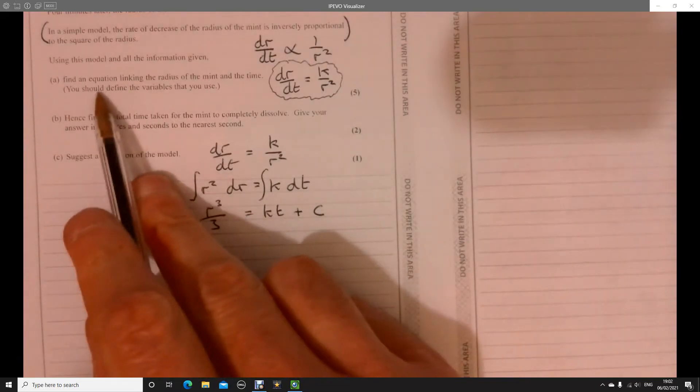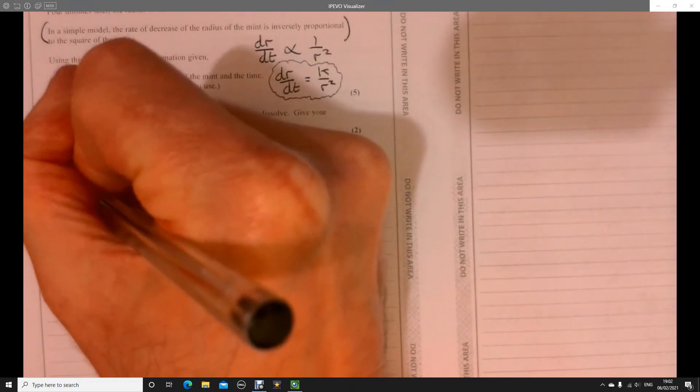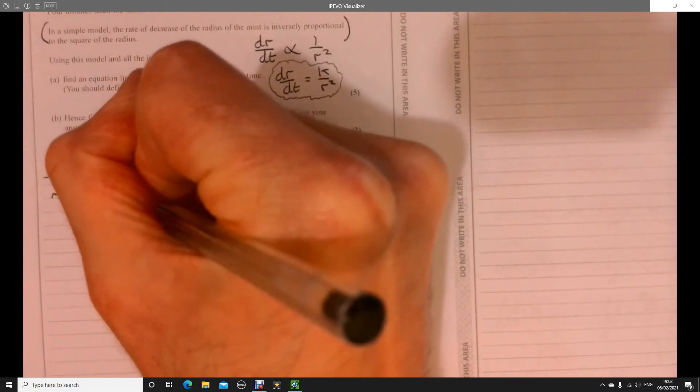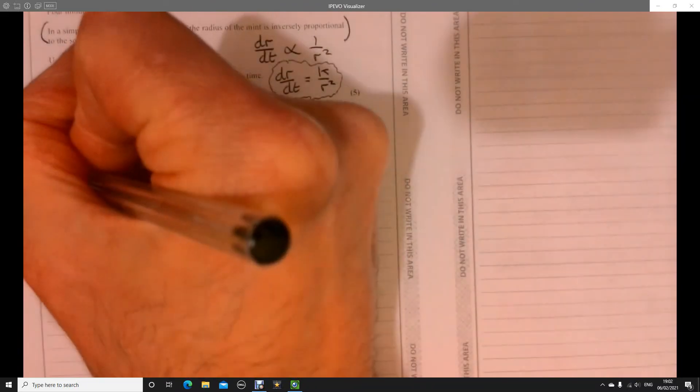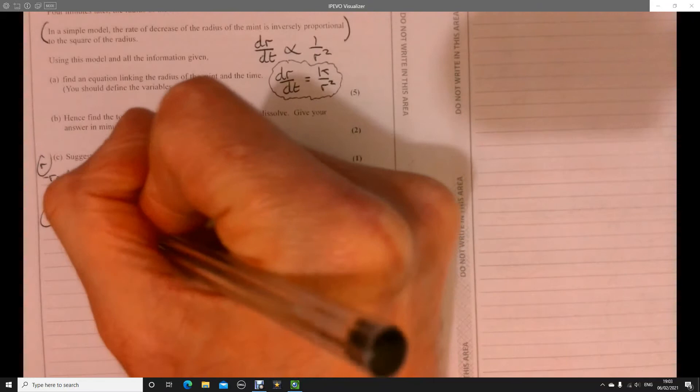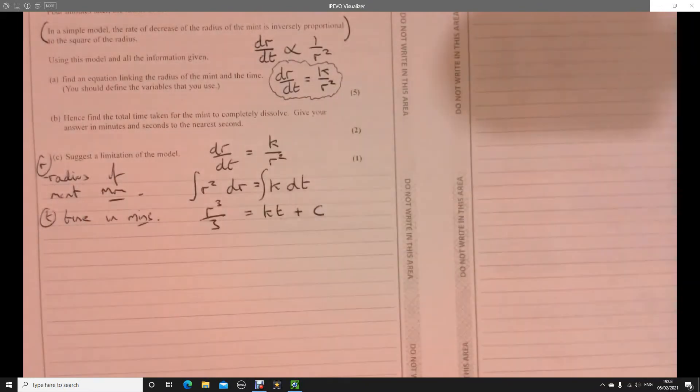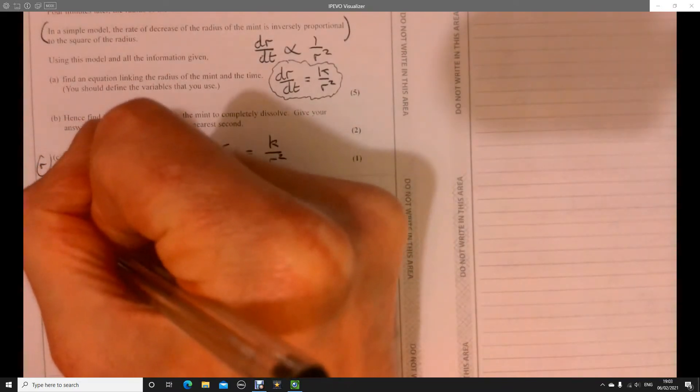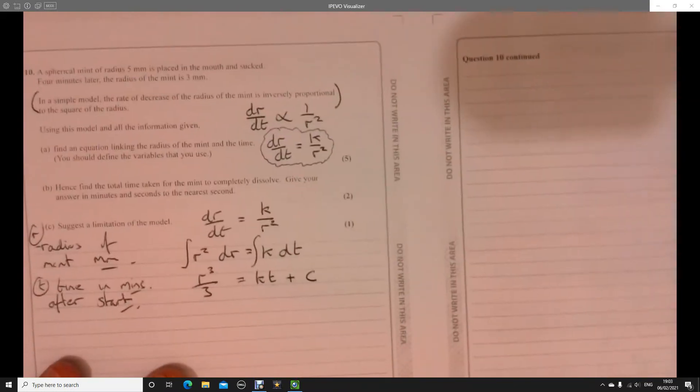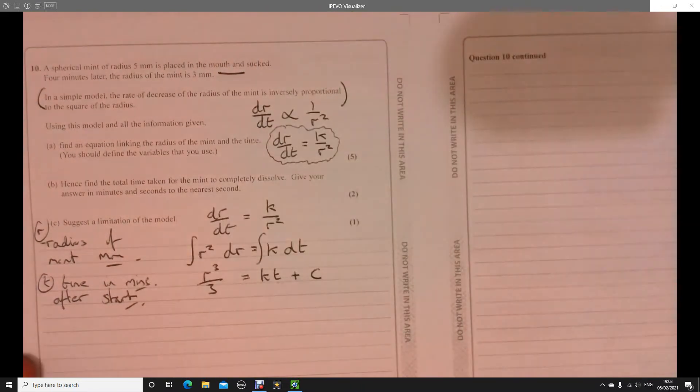Now, the question here does say that we need to define the variables that we're using. So we've got r. So r is just going to be the radius of the mint, and that's in millimeters. So that's r. And then we're going to have t. T is the time in minutes, and that's after, we should clarify that, it's after it starts. What do we mean by start? It's when it's placed in mouth. Right.